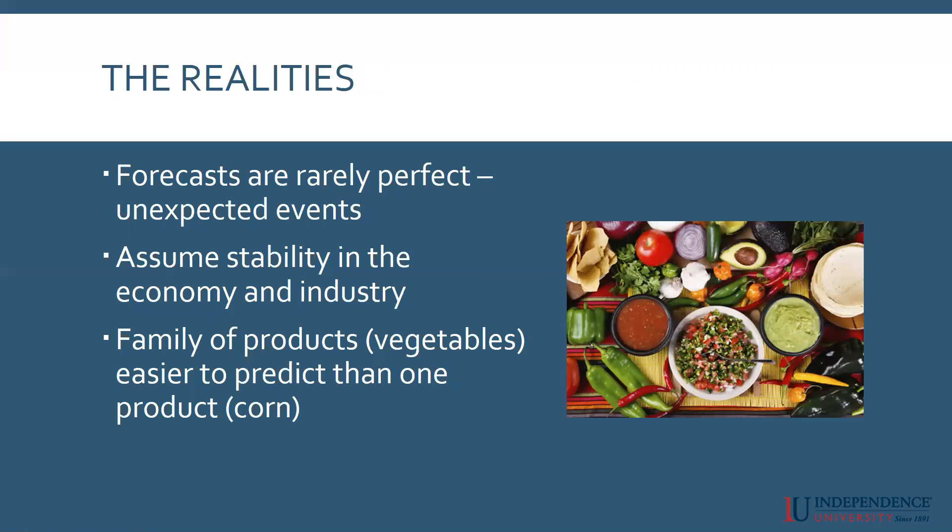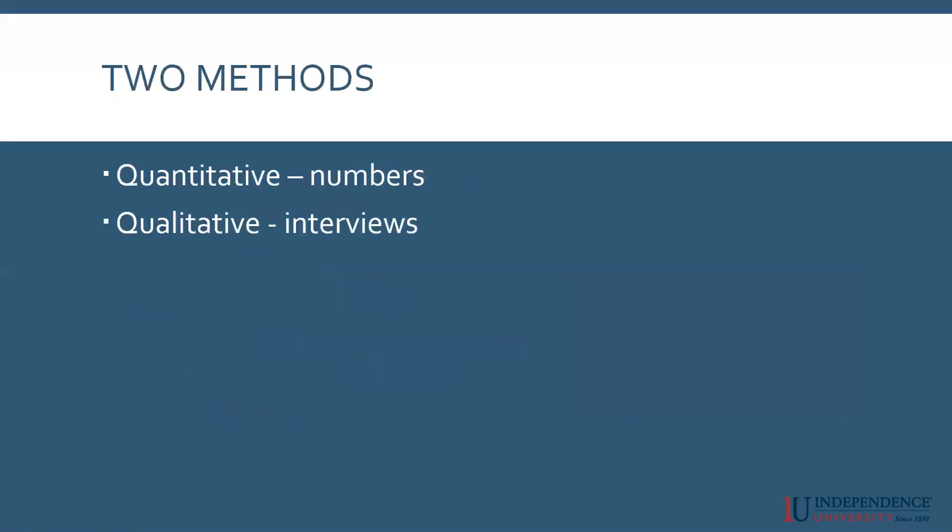Also, if you are predicting a family of products, it's easier to predict than just one product. If you sold shoes, it's easier to say the total sales of all shoes is going to be this amount. It's harder to predict the sales of one particular kind of shoe. It's easy to predict how many vegetables I'll sell; it's very hard to predict how much corn I'm going to sell this year. So if you're working with a family of products, you'll probably have a more accurate prediction.